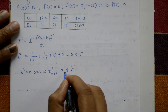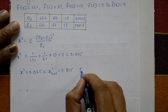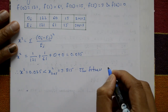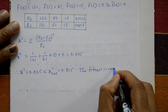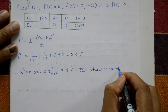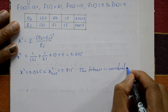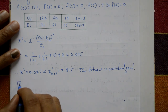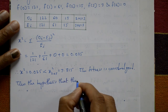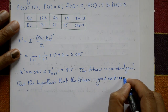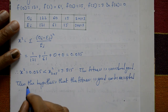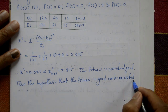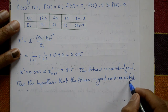The calculated chi-square value of 0.025 is less than the given critical value of 7.815. Therefore the fitness is considered good, and thus the hypothesis that the Poisson distribution is a good fit can be accepted.